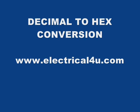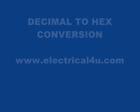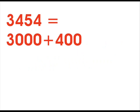Let us give an example of decimal to hex conversion. Suppose we have one decimal number 3454. This number represents the amount of 3000 plus 400 plus 50 plus 4.